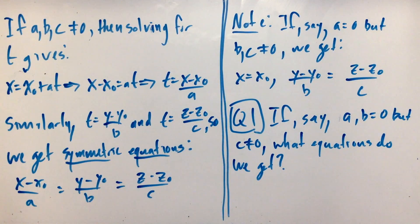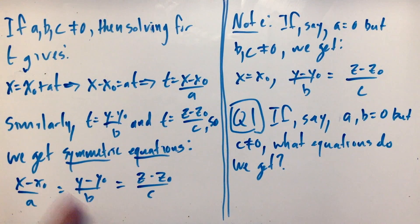If a, b, and c are non-zero, then we can solve for t. We saw in the last example that when a and b were non-zero, we had equations for x and y that involve t, but when c was zero, we had an equation for z that did not involve t. But if all of them are non-zero, we can solve for t in each instance. If I solve x = x0 + at for t, I get t = (x - x0)/a.